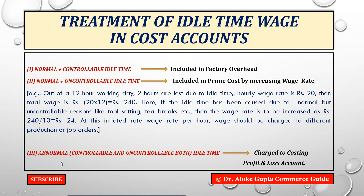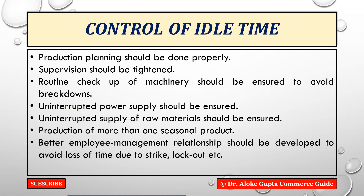The third treatment is for abnormal idle time. Abnormal idle time can be controllable or uncontrollable, but in either case, the wage for abnormal idle time should be charged to the costing profit and loss account. It should not be charged to the product, to the job, or to the customer. The organization has to bear this cost. As discussed in the overtime wage video as well, abnormal losses should always be charged to costing P&L.